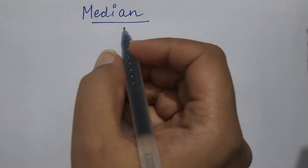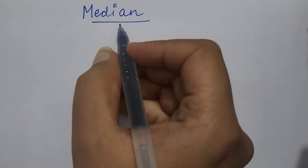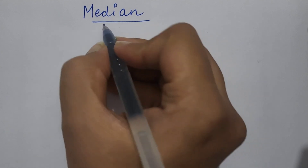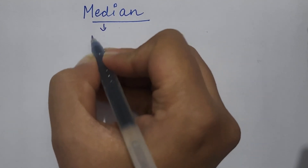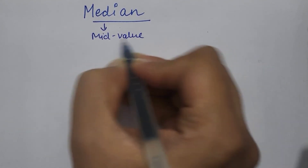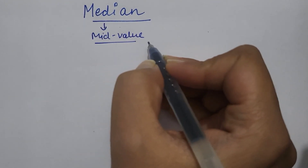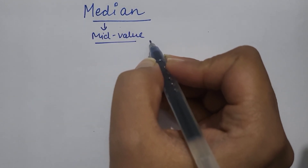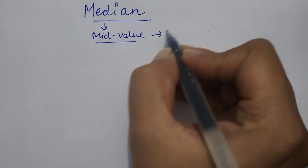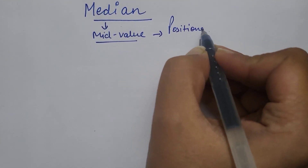Hello students, welcome to NB Commerce Academy. Our today's topic is median. Median represents the mid-value of a series which divides the entire series into two equal parts. So it is a sort of positional average.